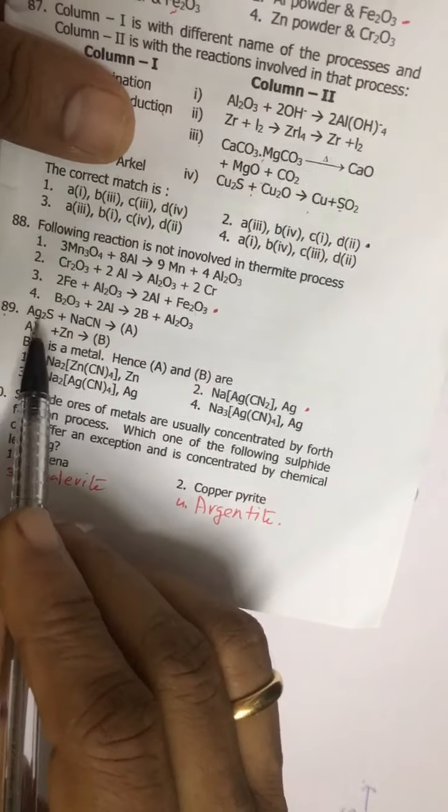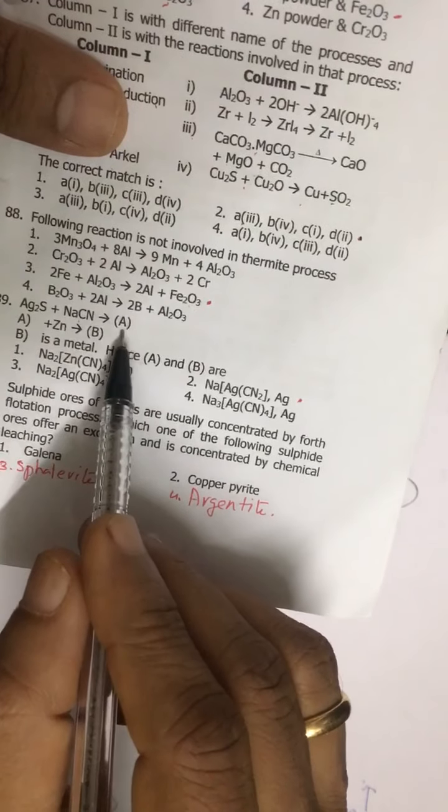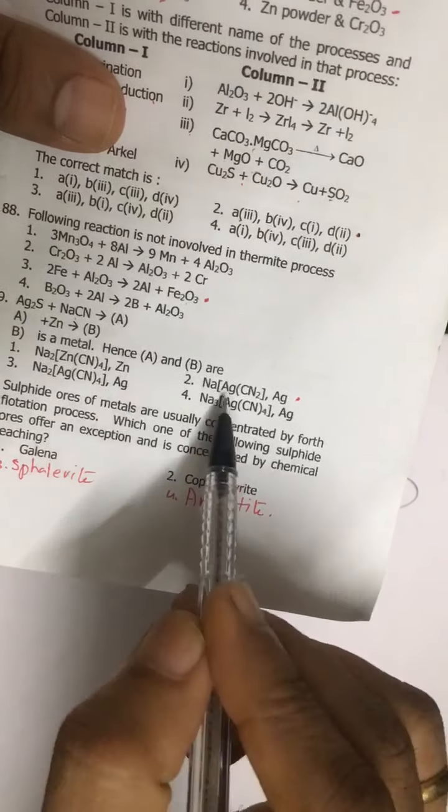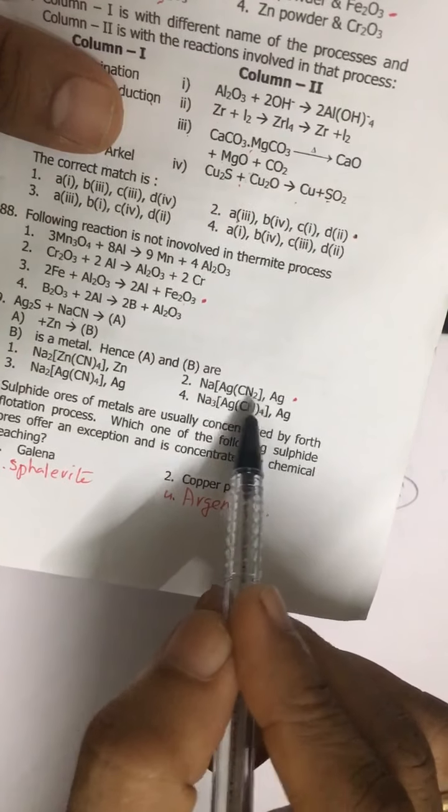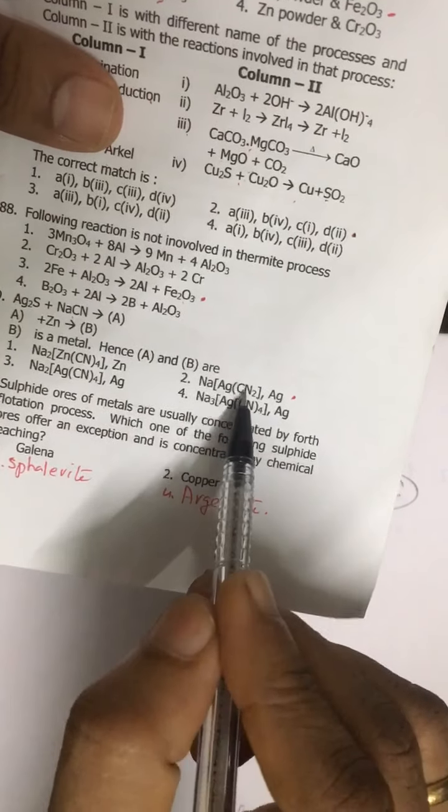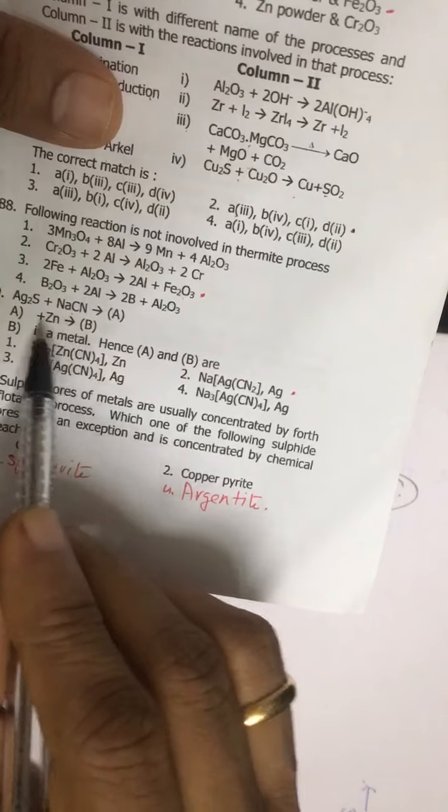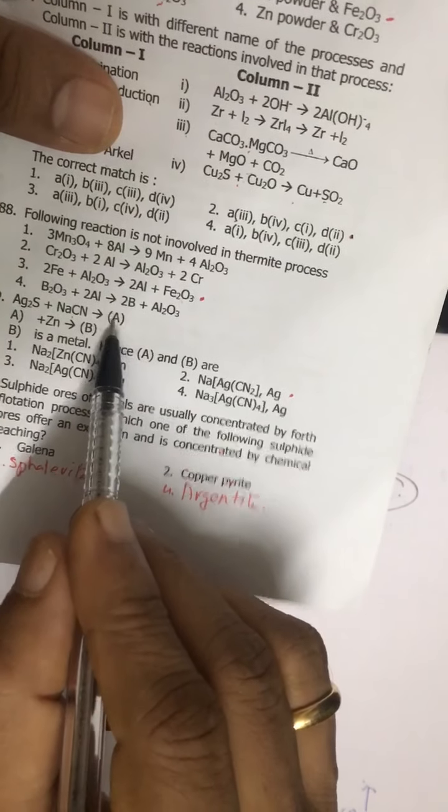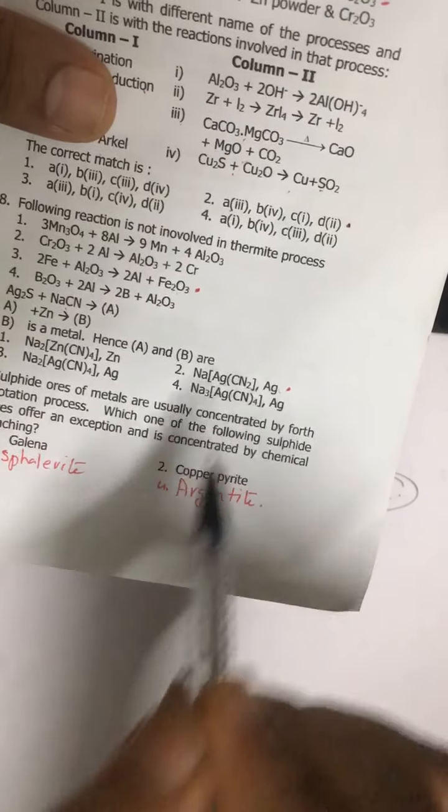Question number 89: Ag2S is treated with NaCN, we get this A - this is a complex, that is Na[Ag(CN)2]. And then this complex is treated with zinc metal, so this zinc releases this silver as a metal.